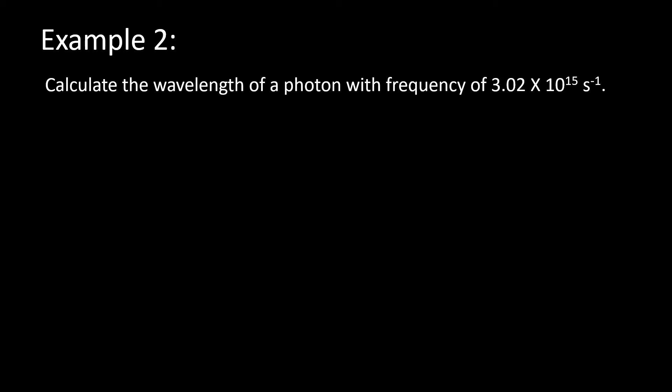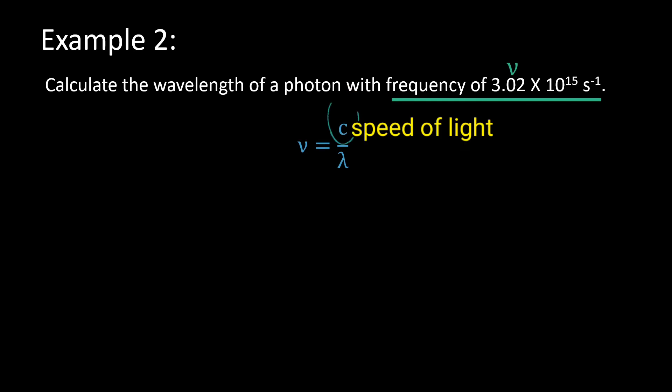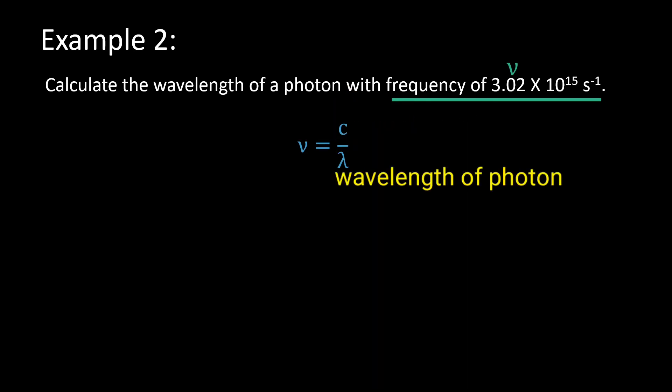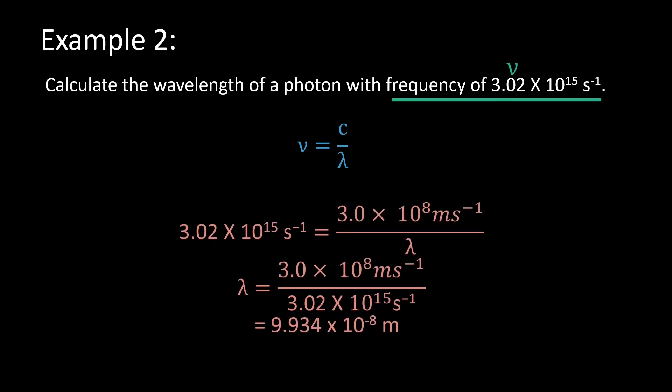In example two, you want to calculate the wavelength of a photon and you are given the frequency of the photon. Step one: list out the information given, which is the frequency of photon, 3.02 times 10 to the power of 15 per second. Step two: choose an appropriate formula which relates the wavelength of photon with the frequency of photon — frequency equals speed of light divided by wavelength. Step three: substitute the information into the formula to get the wavelength of photon.